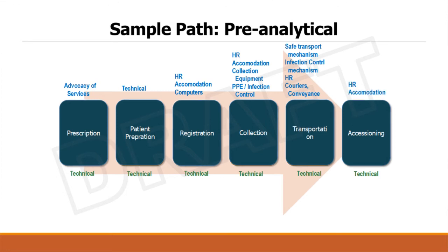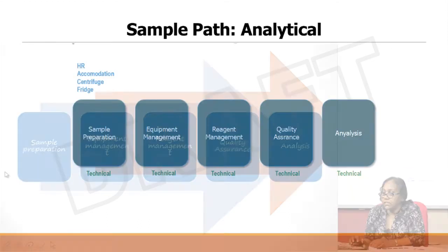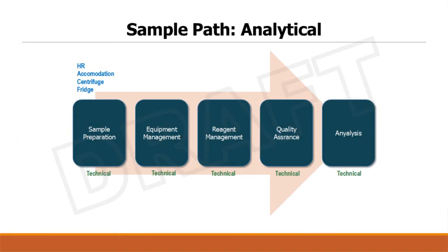Accessioning — that is where you receive the samples — there should be human resources and accommodation and environment. Moving on to the analytical sample path: sample preparation requires accommodation, environment, centrifuges, and refrigeration mechanisms — all should be provided by the management. Equipment management — again availability most importantly, downtime management, calibration options, and AMC or CMC mechanisms should be provided by the management.